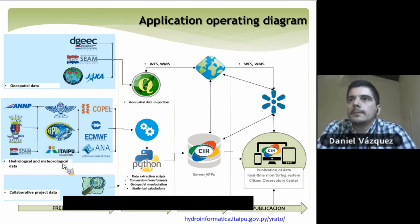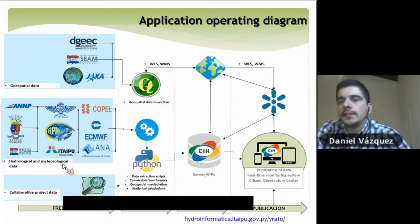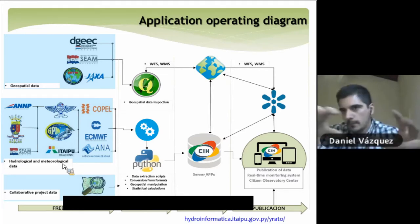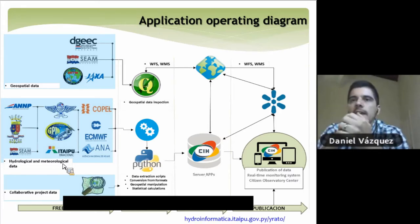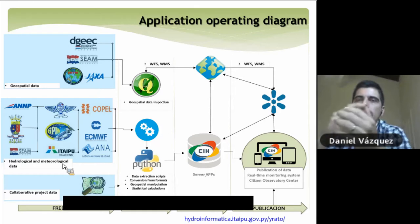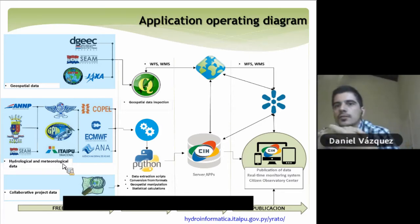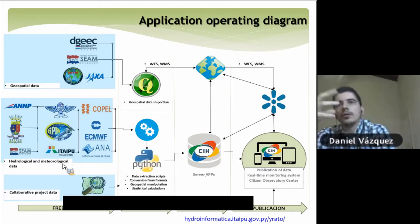During the planning process of this project, we came up with this operating diagram. As you can see, the entire process has four main components. The first one is related to data in general — there is data in many institutions, coming in different formats, different time steps, different sizes, and different types such as geospatial, hydrological, and meteorological. There is a large amount of data being collected from all these sources.